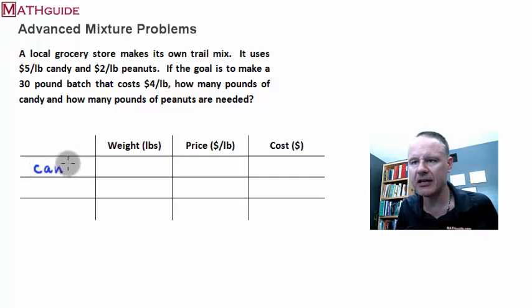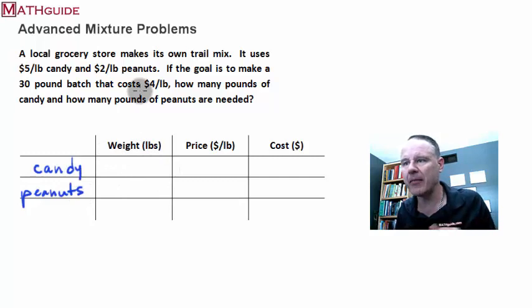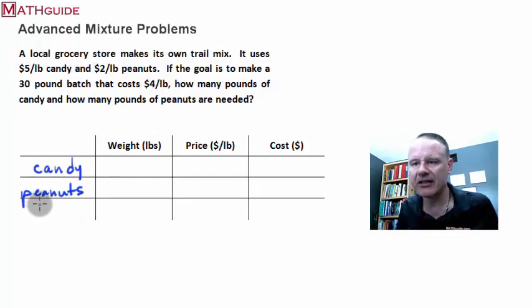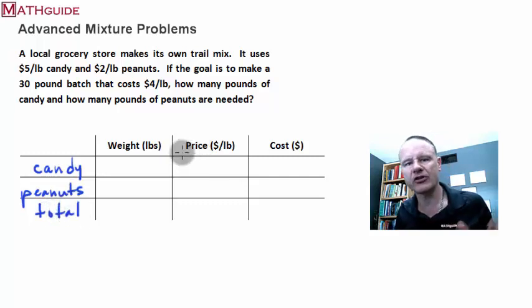I'm going to say there's candy is one ingredient, and peanuts is another ingredient. So what are we going to do? We're going to now take this information and fill it in. There's also a larger amount here to consider. There's the batch, the total batch. In other words, I'm going to say that is the total mixture, right, once we put it together. So here are our ingredients, candy and peanuts, and together we're going to combine them into a total mixture.